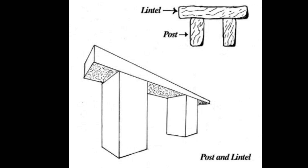Before we get into Stonehenge's content and context and talk about its form, we need to have a conversation about architecture. In your notes, create a section called 'Architectural Elements.' One of the earliest methods of spanning a space and one of the simplest forms of construction is called post and lintel — the most basic of all architectural styles. You have two upright posts that support a horizontal element known as the lintel. There are countless variations: wood structures, dolmens, underground burial chambers of prehistory.